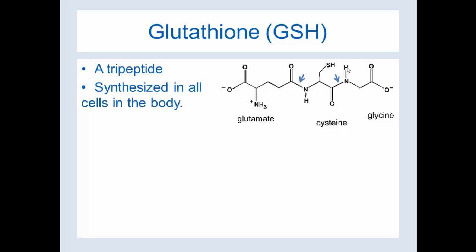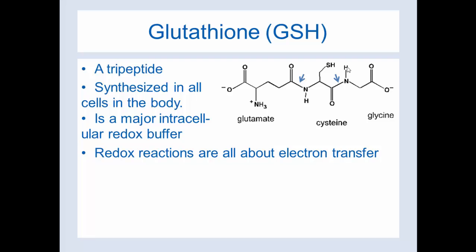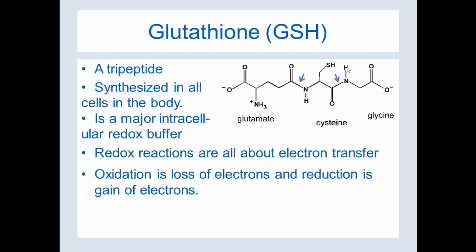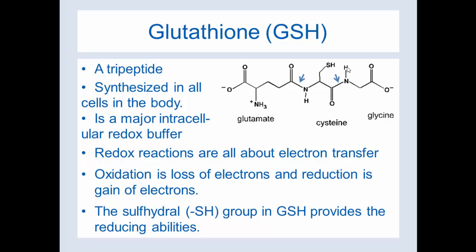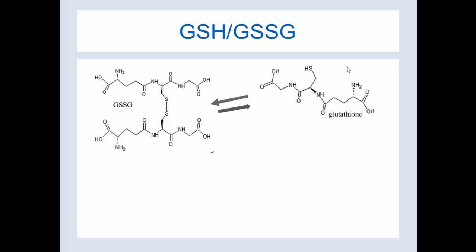Glutathione is synthesized in all cells in the body. It's a major intracellular redox buffer. Redox reactions are all about electron transfer — this is like huge chemistry. Oxidation is the loss of electrons, and reduction is the gain of electrons. So when you think of glutathione, start thinking about electrons. The sulfhydryl group in glutathione provides the reducing abilities.